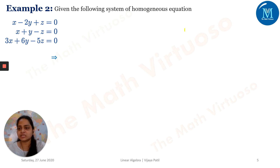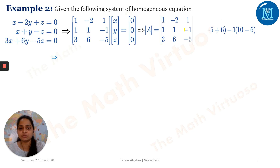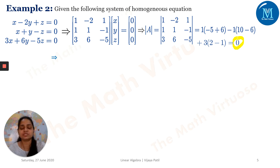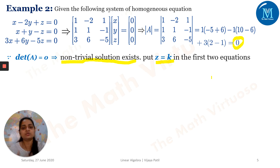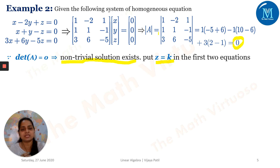Now the next set of equations: AX = 0 again. Determinant of A equals zero here. So we've got determinant equals zero, meaning the second condition comes into picture — a non-trivial solution will exist. I have to put Z = K in the first two equations. You are free to take any two equations, but whenever we are choosing equations, it is advisable to choose equations so that you get your answer quickly.